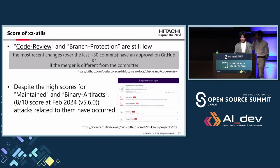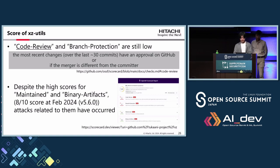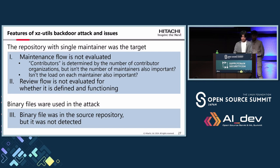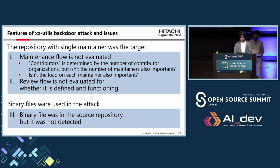How is the XZ Utils score on Scorecard? We can see it in a web application easily. We have two insights: First, the scores for code review and branch protection are still low, and the risk level of these metrics is high. The code review metric is calculated based on the most recent changes — whether they have approval on GitHub or whether the merger differs from the committer. Second, despite high scores for maintained and binary artifacts, attacks related to them have still occurred. The score by Scorecard is just an indicator; the final judgment is made by the user.